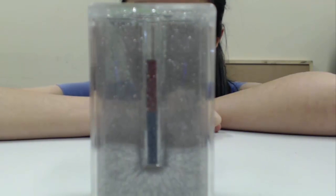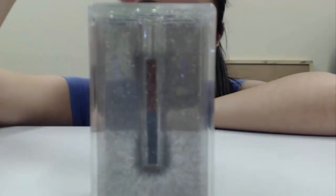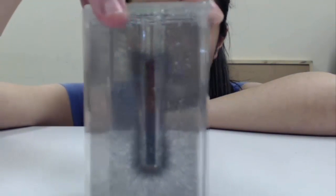If I shake this so that the iron filings are dispersed evenly and then place the bar magnet inside it, we can see field lines starting to form. Now rotating this, we can see field lines are three dimensional and forming all around the magnet.